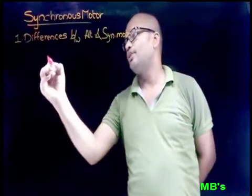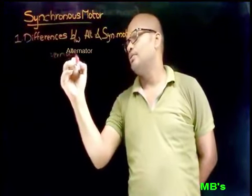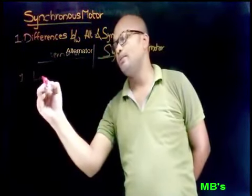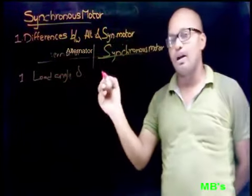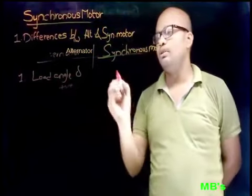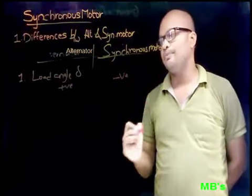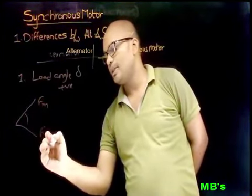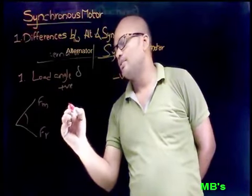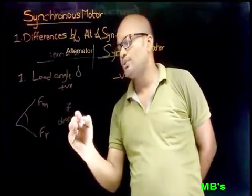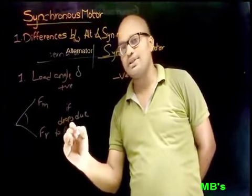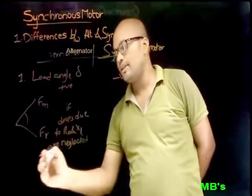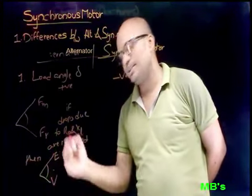The first topic is differences between alternator and synchronous motor. The first difference is about load angle delta. For an alternator, the load angle is considered positive, and for a synchronous motor it is considered negative. Load angle is the angle between the main field MMF and air gap MMF. If drops due to armature resistance and leakage reactance are neglected, then delta is the angle between induced EMF and terminal voltage V.